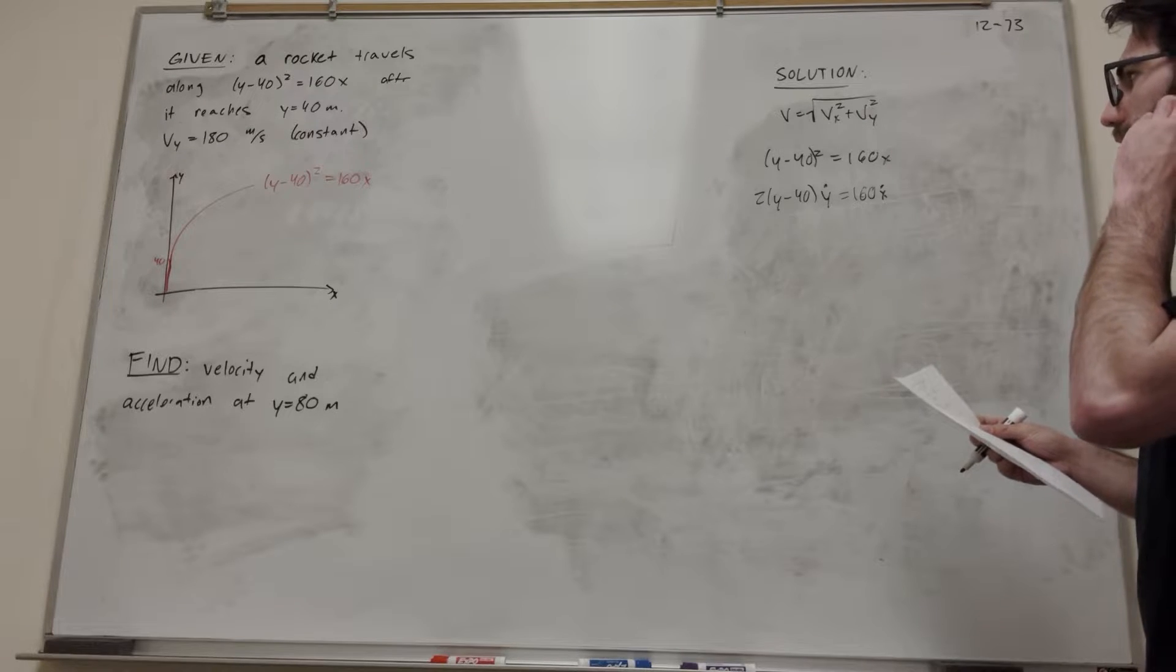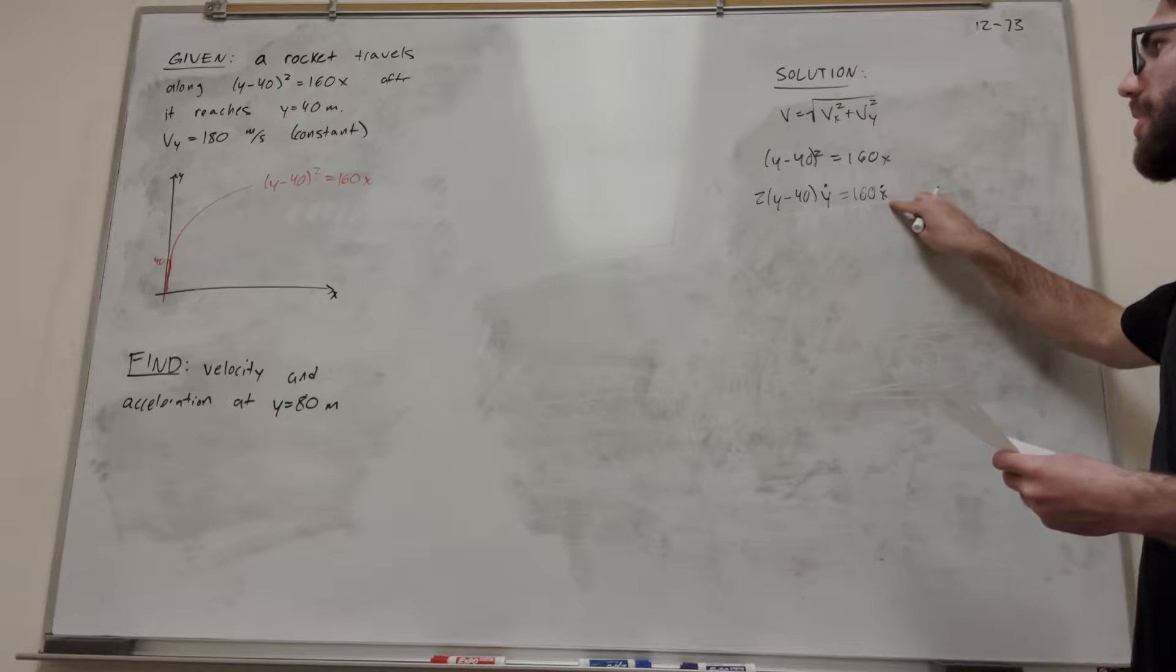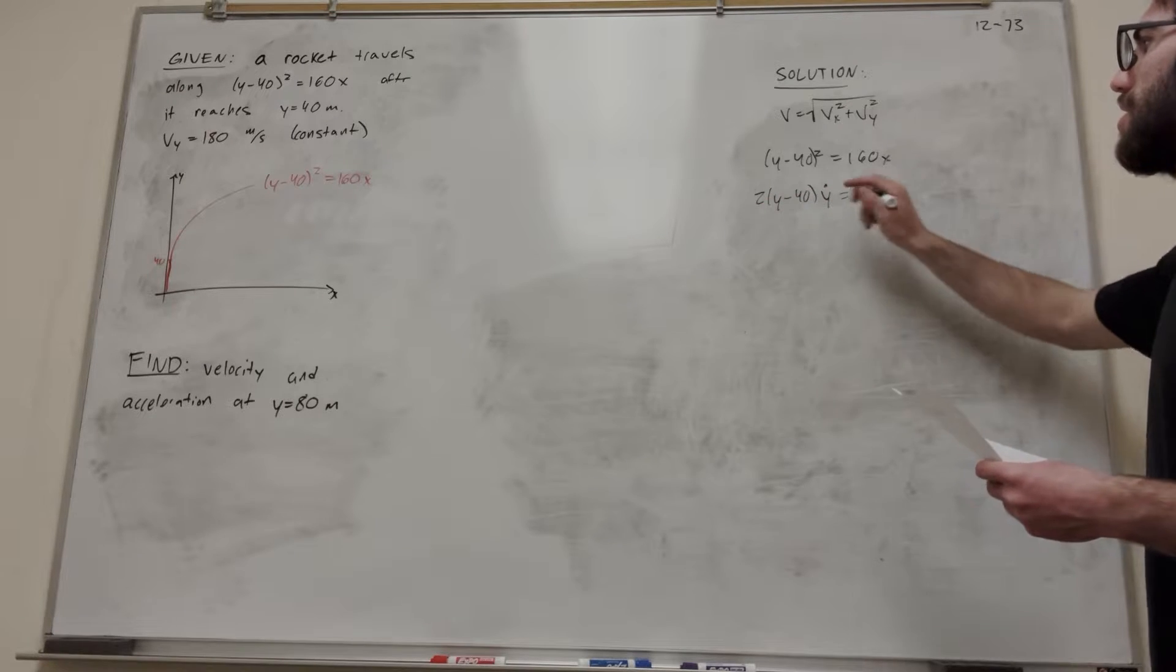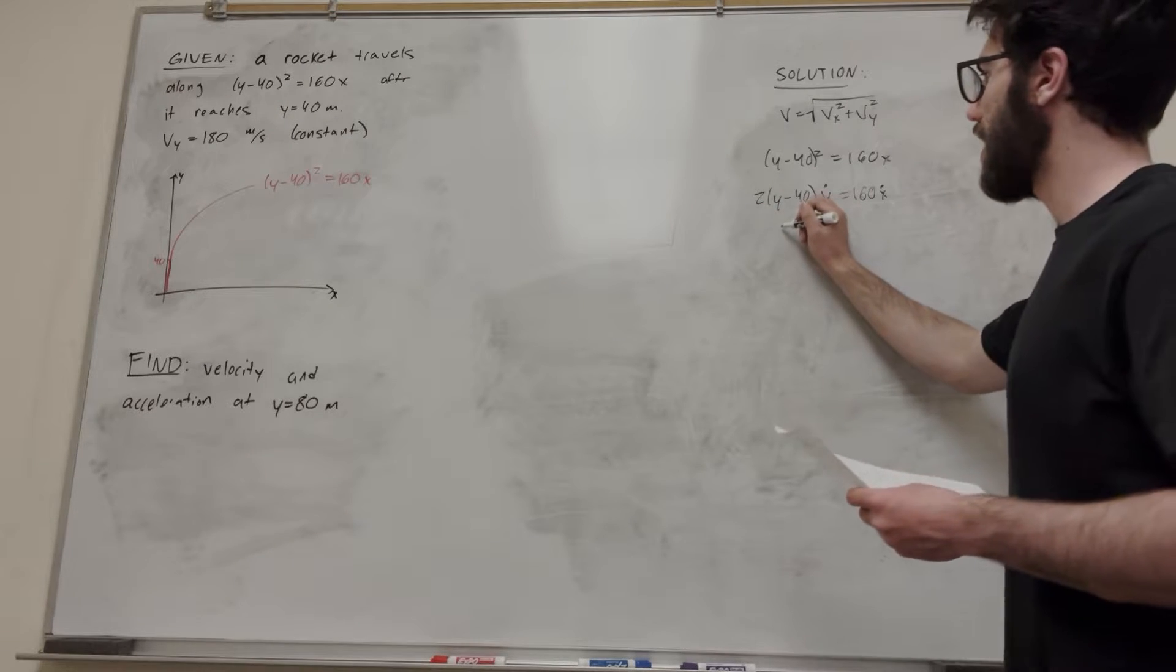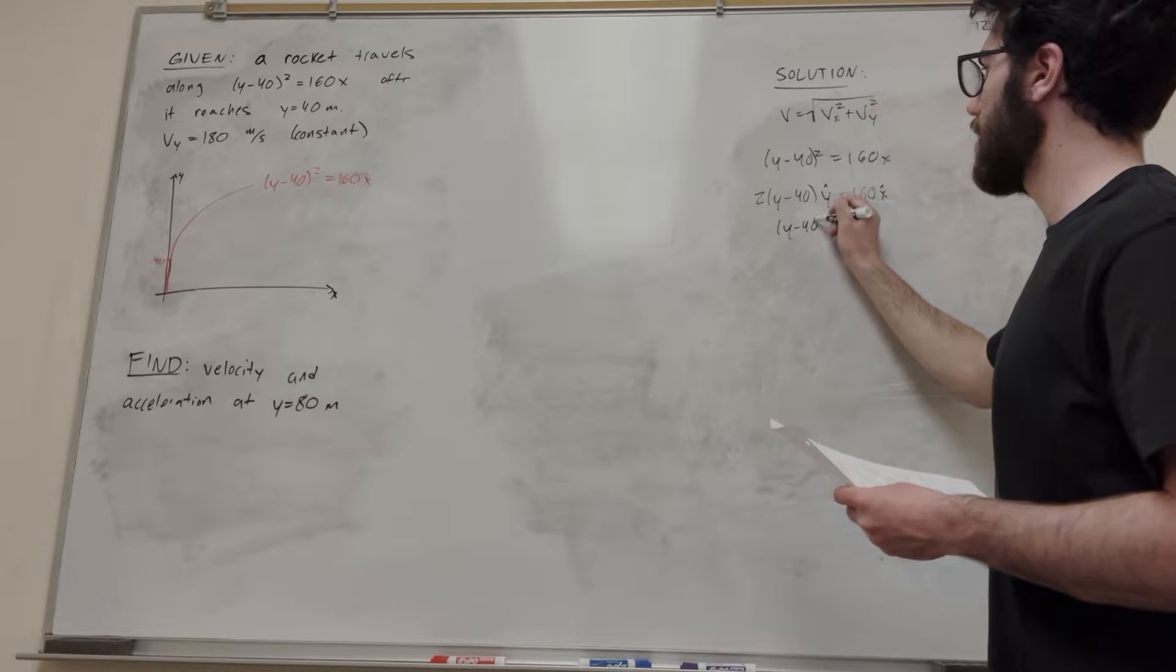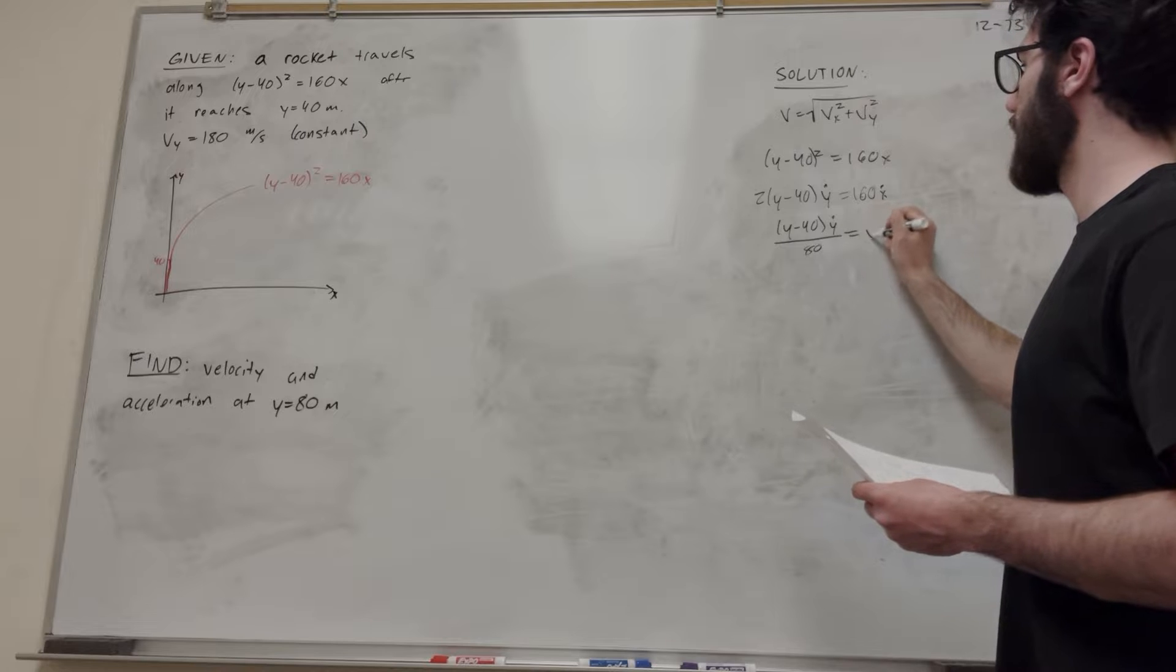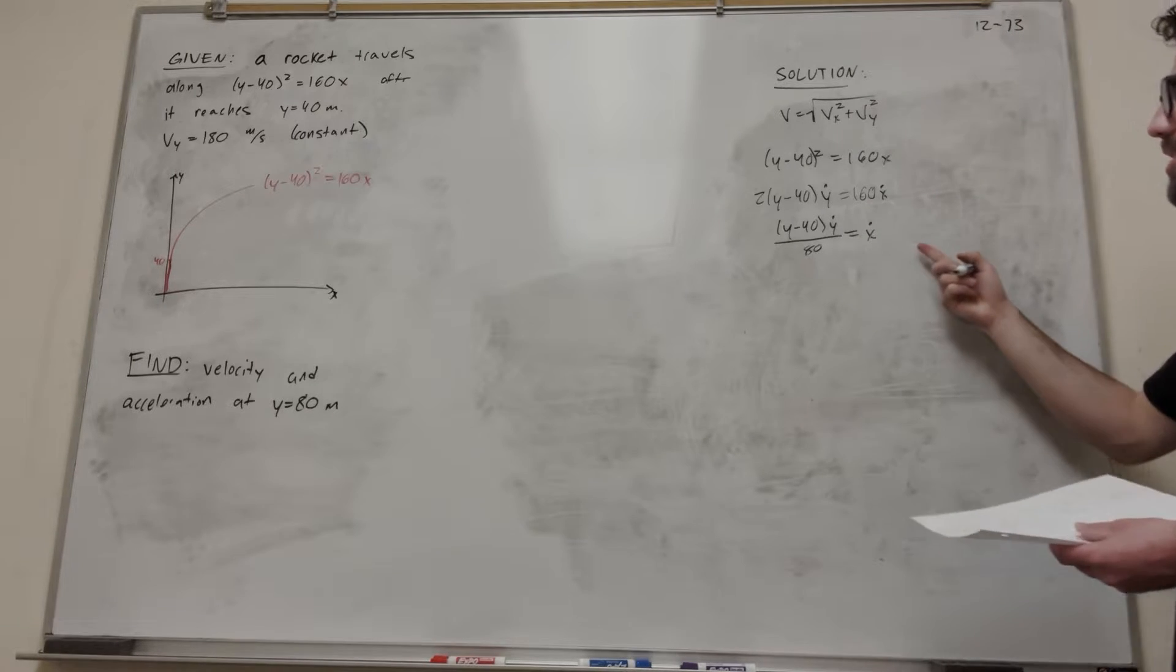Let's rearrange this equation. We're solving for x dot. Let's divide by 2 first to get rid of that. So we're going to have y minus 40 times y dot over 80 equals x dot. This is how we find x dot.